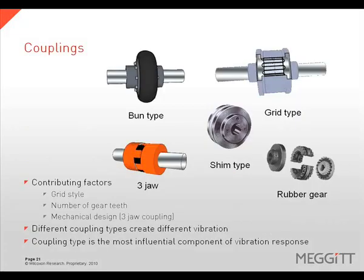Coupling type can be a major contributing factor to the vibration response of misalignment, as different coupling types will create different vibration responses. A band style coupling may exhibit the traditional 1x or 2x vibration response. However, with a 3-jaw coupling, the 3x vibration is the best indicator of alignment condition. Grid style or gear couplings will vary depending on how many grid elements or gear teeth are in the load zone.